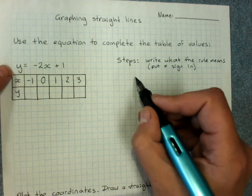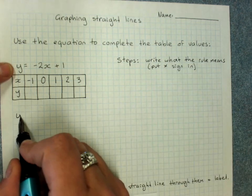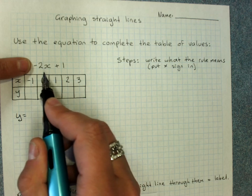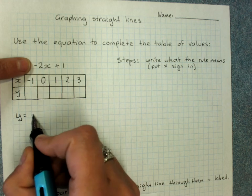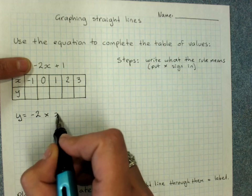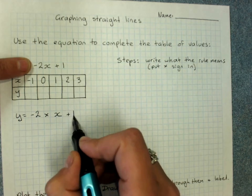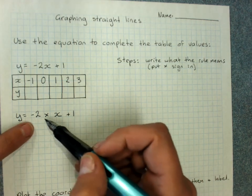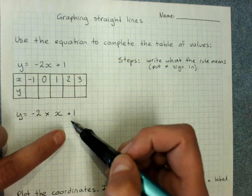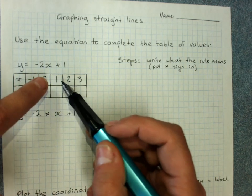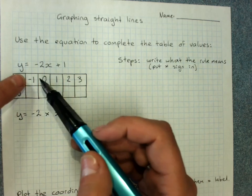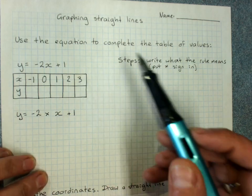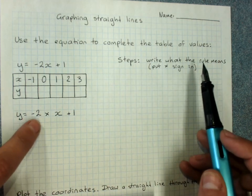And this will include put the times sign in. So, let's do it under here. Y equals negative 2x means negative 2 times x. Negative 2 times x plus 1. And we need to do negative 2 times x plus 1 for every different value of x here. Because this will get us a lot of different points on the line which we can join up.